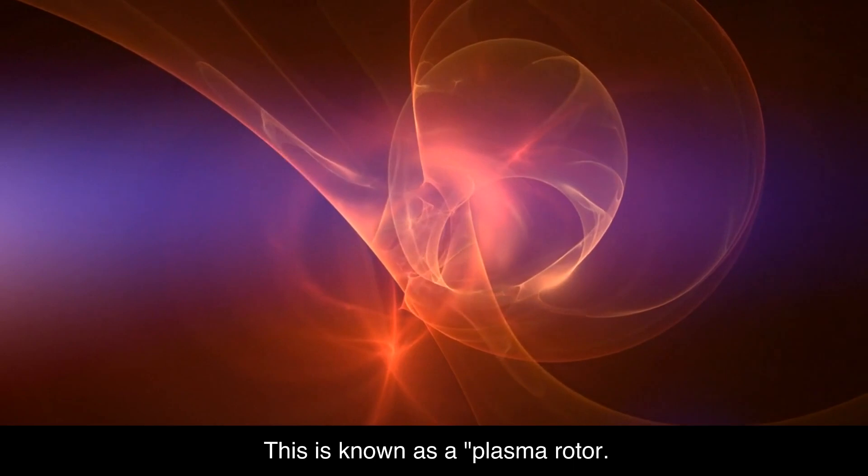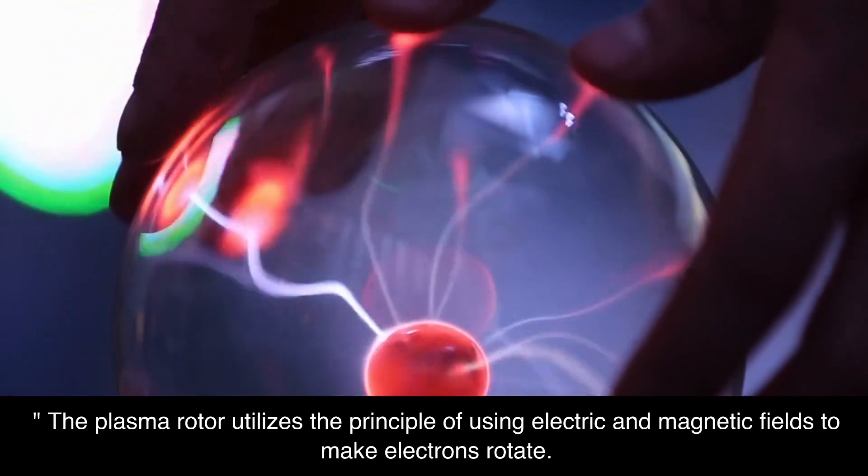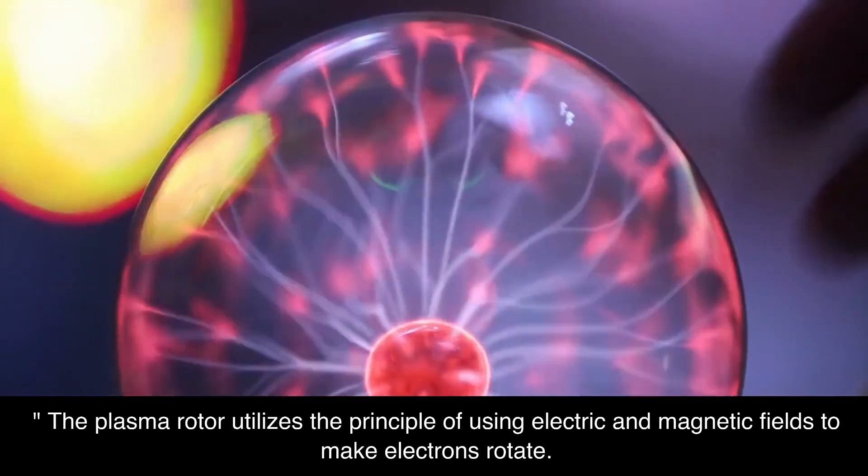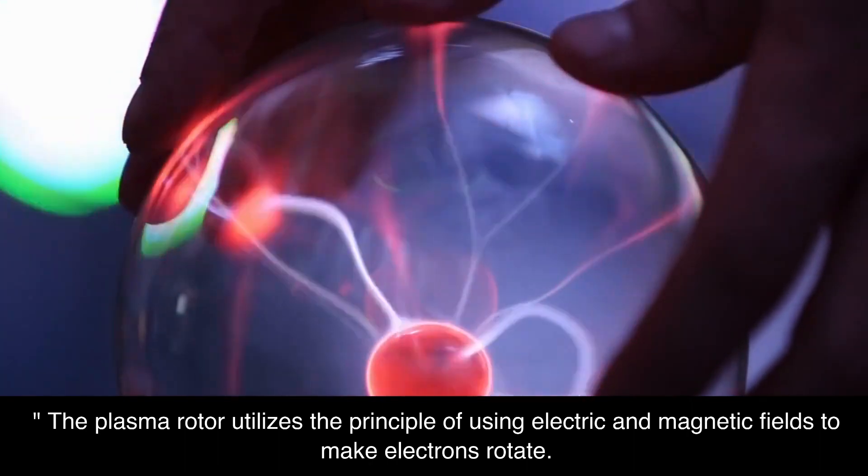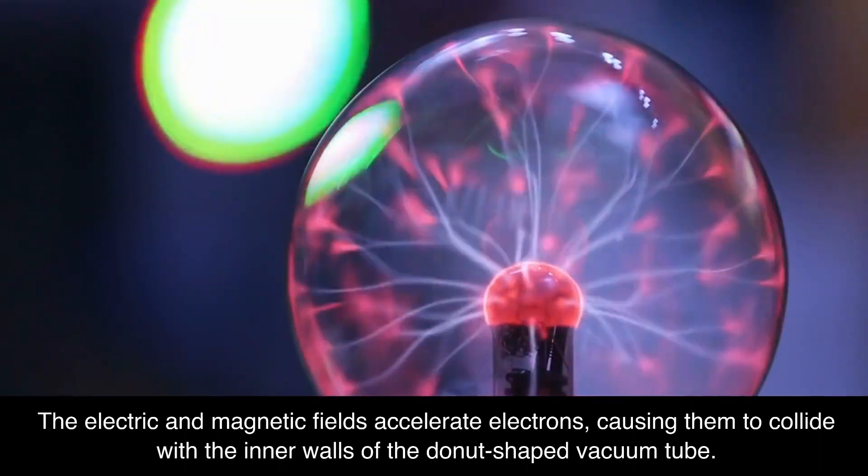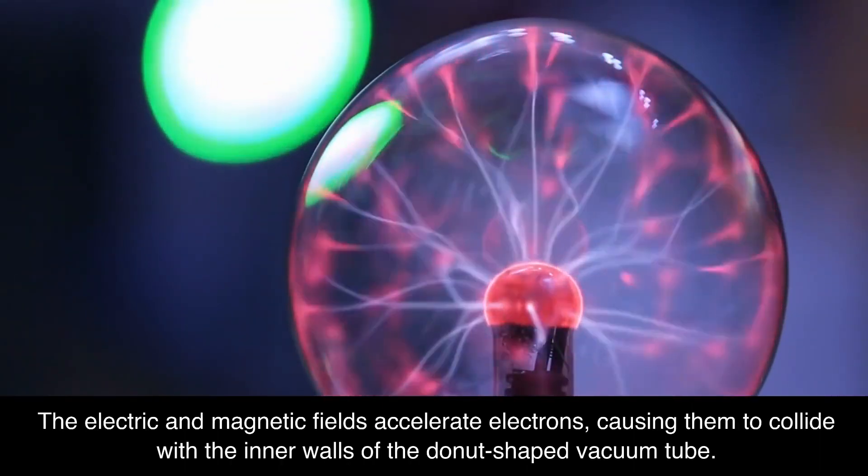This is known as a plasma rotor. The plasma rotor utilizes the principle of using electric and magnetic fields to make electrons rotate. The electric and magnetic fields accelerate electrons.